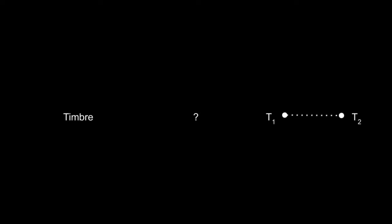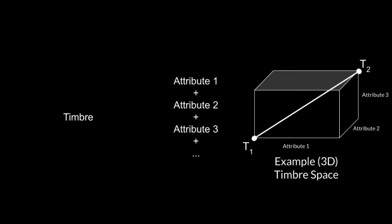So to better define what timbre is, researchers have come up with this idea of a timbre space. Instead of timbre being linked to a single numerical attribute, it's linked to multiple attributes. In a timbre space, each attribute is a dimension that the sound can vary along. Here, for example, we would have a three-dimensional space with three separate attributes, one for each dimension.